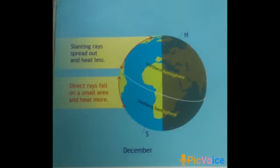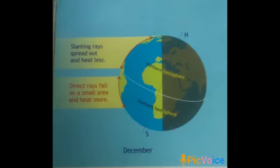In December, the northern hemisphere is tilted away from the sun — the opposite of June. So the days are shorter and nights are longer in the northern hemisphere, while in the southern hemisphere the days are longer and nights are shorter. The shorter days and slanting rays bring winter to the northern hemisphere, and the direct rays of the sun bring summer to the southern hemisphere.